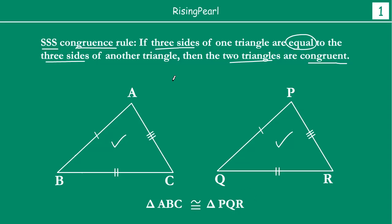This is very easy to remember because it is Side Side Side — three S's. Now, a lot of people may confuse this: three sides in one triangle being equal to three sides in another triangle does not mean all three sides within the same triangle are equal. The point is always about two triangles — corresponding sides equal, that is AB = PQ, BC = QR, AC = PR. If this is the case, then we say both triangles are congruent by the SSS congruence rule.